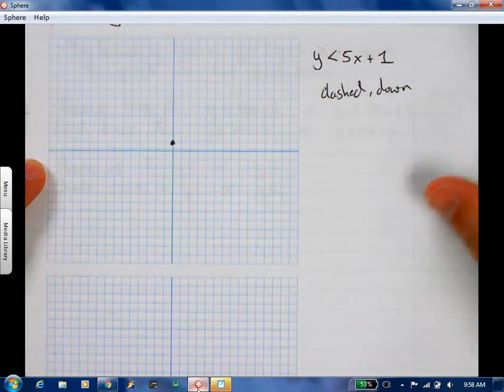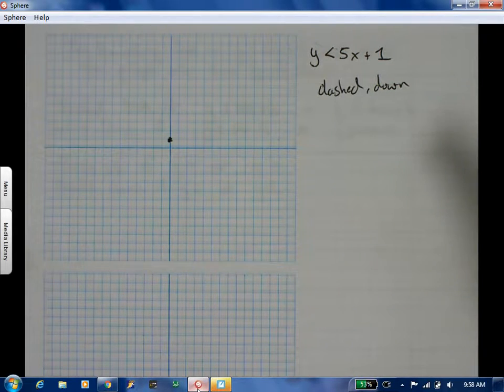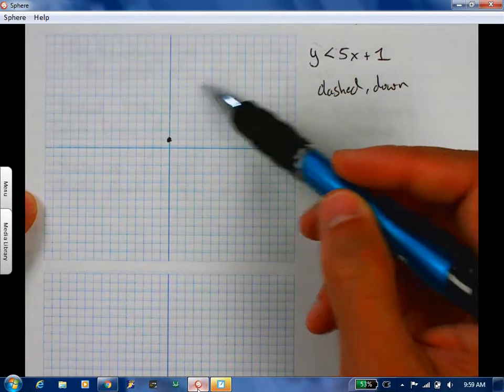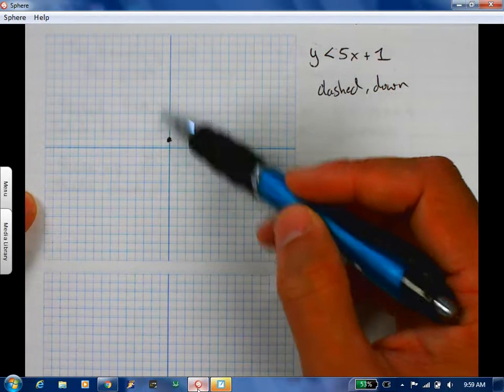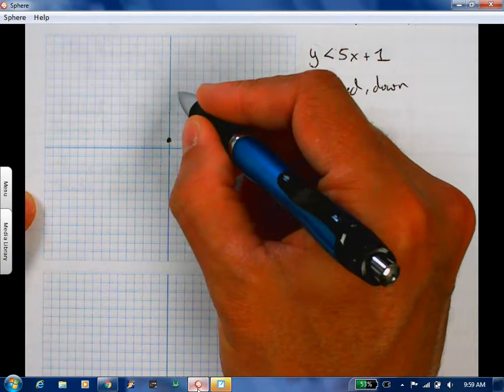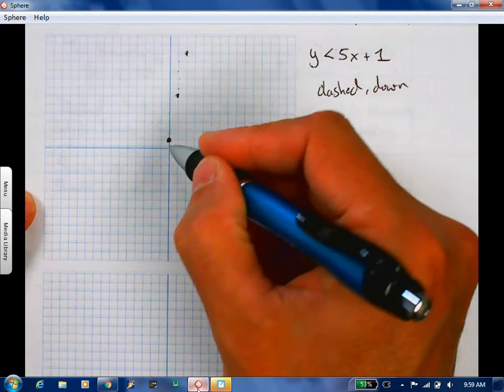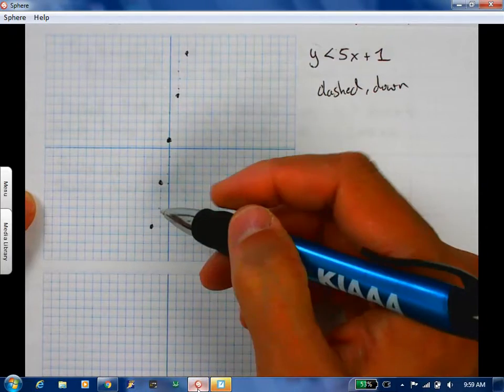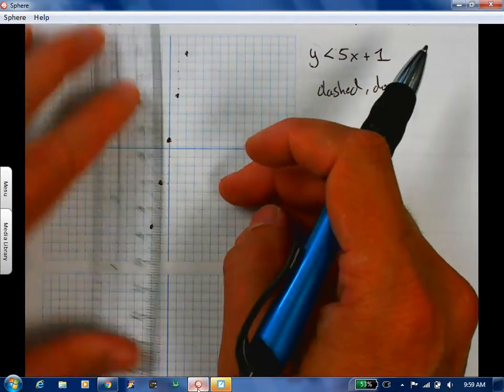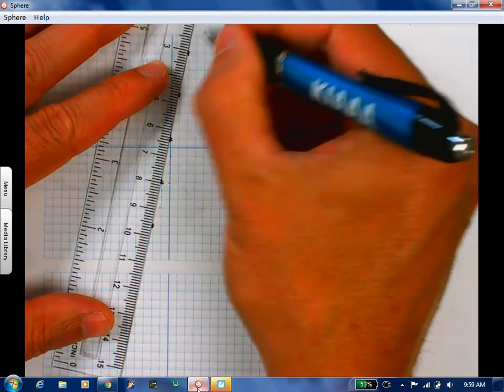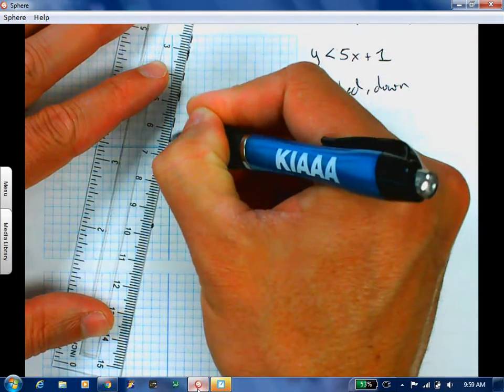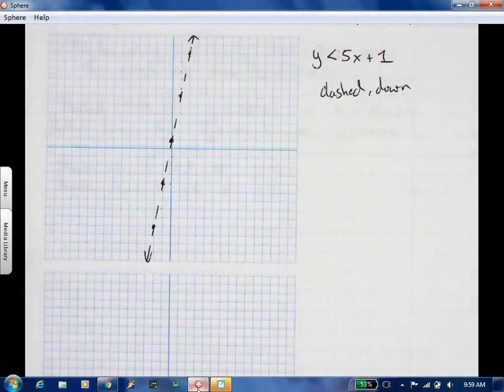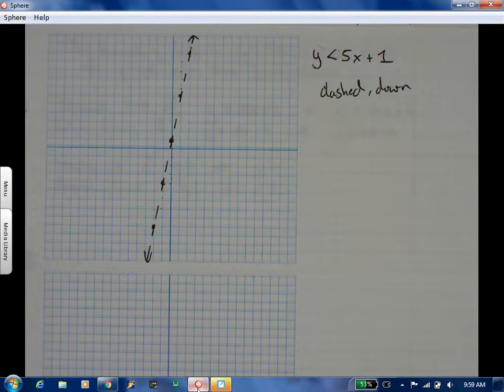The y intercept is zero, one. This graph has a vertical stretch of five. So instead of going up one over one, you're going up five over one. So your slope is five. These are just the dots as part of the graph. So when I go and draw my line, now I'm going to make a dashed line. The line itself is going to be dashed. You can use dots to help make that line up.